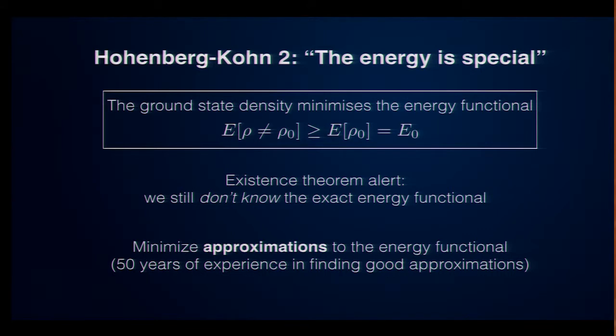Now, what makes it somewhat more practical is the second theorem. The second theorem tells you that also the energy is something very special. The energy, of course, can only depend on the density because everything depends on the density. And the second theorem tells you if you would have a way to compute the energy for a given density, then the one density that gives you the smallest energy is the ground state density you are looking for. So, if you could compute it, this would give you a way to look for the ground state density. Of course, we cannot compute it, but at this point, people have found clever approximations, and instead of the real thing, you are minimizing the approximation.